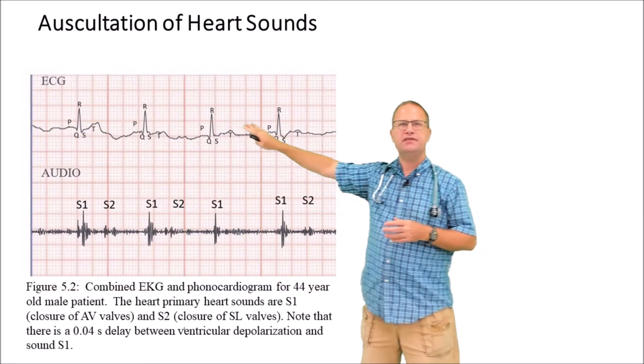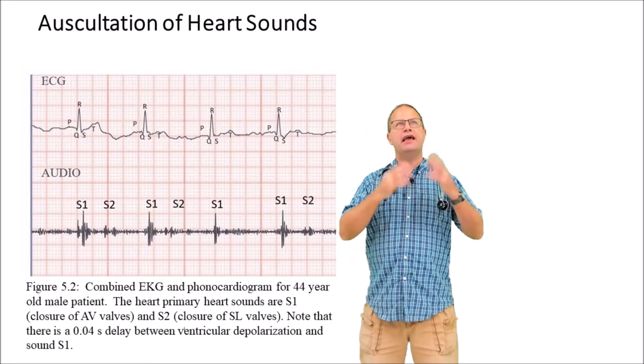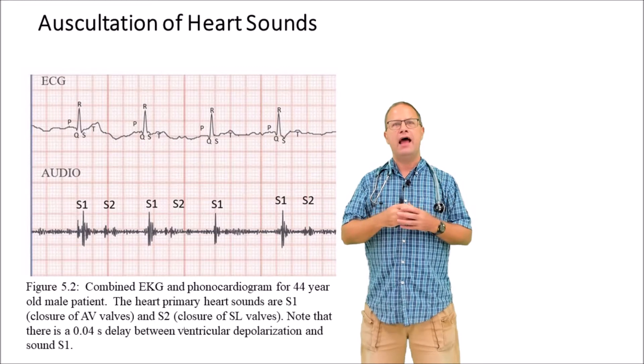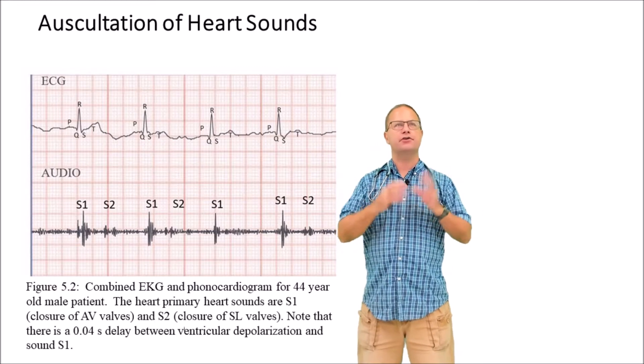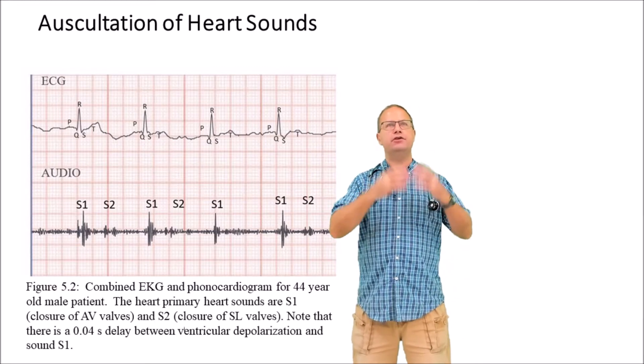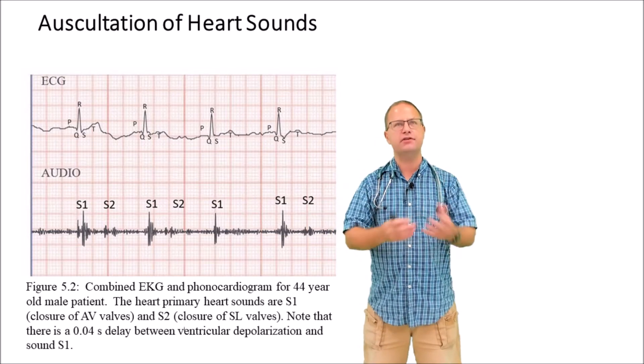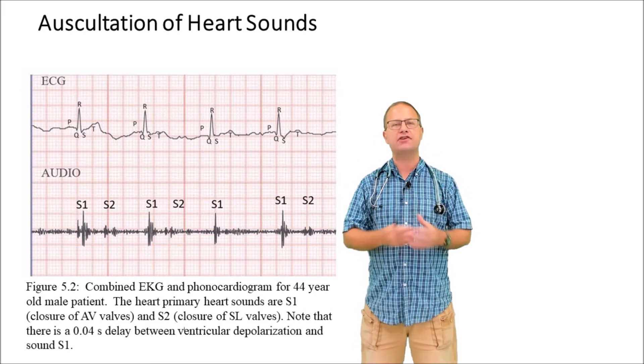What you can see on this EKG is that closure of the AV valves, S1, actually happens a little bit after the QRS complex. There's a little bit of a delay between QRS, which is depolarization of the ventricles, and the actual contraction of the ventricles.